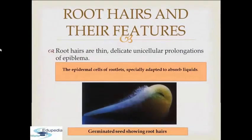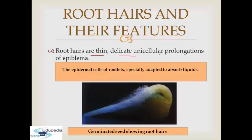Next, we will discuss about root hairs and their features. Root hairs are thin and very delicate — they are unicellular prolongations of epiblema. Epiblema are the epidermal cells of roots specially adapted to absorb liquids. In this image, you can see a germinated seed showing very small, delicate, and thin root hairs.